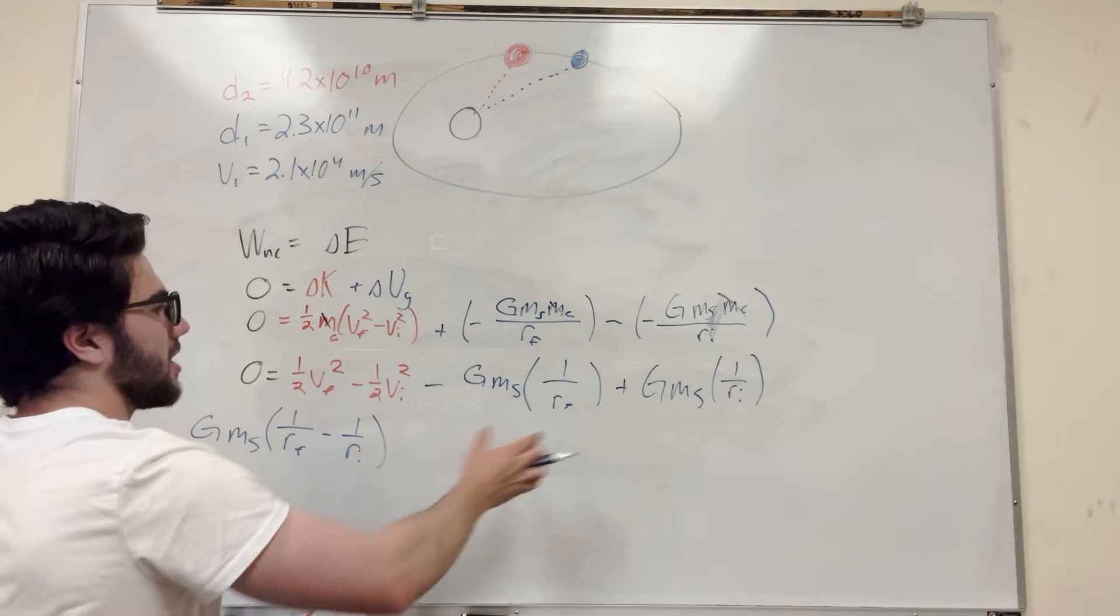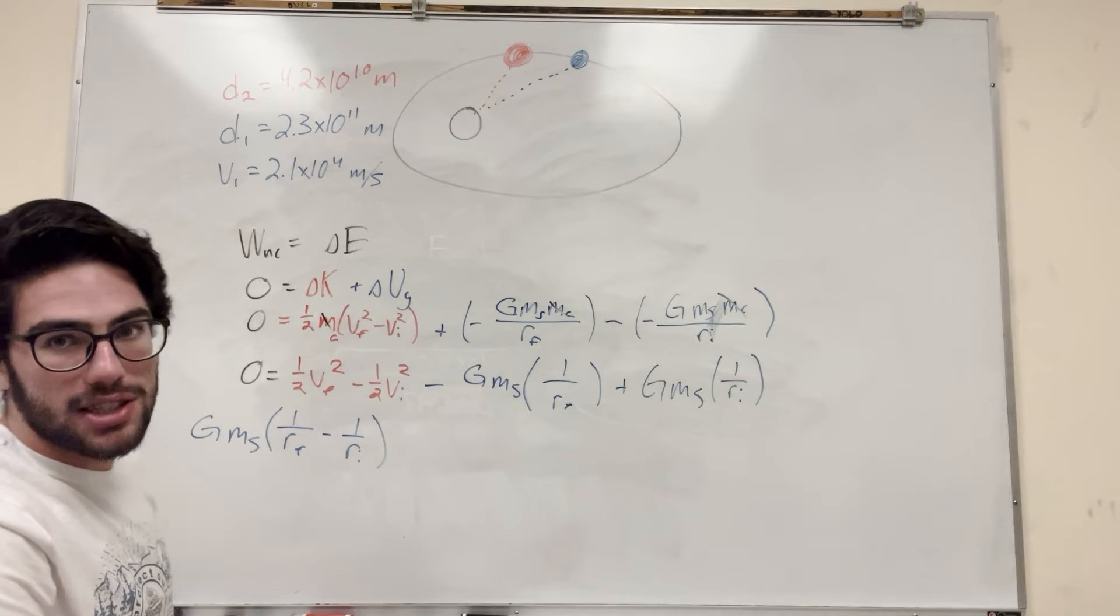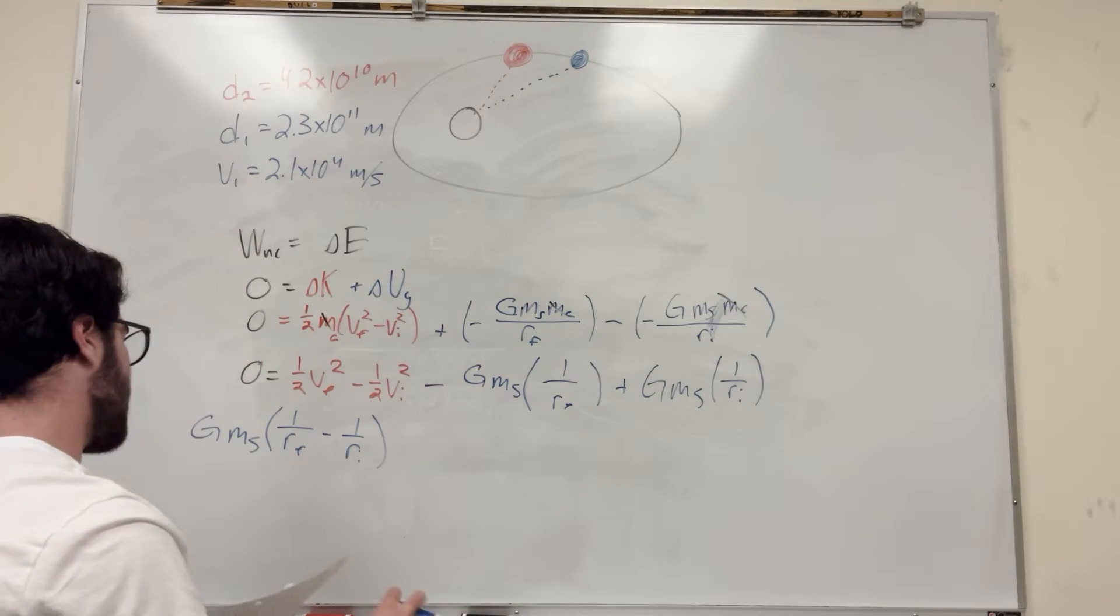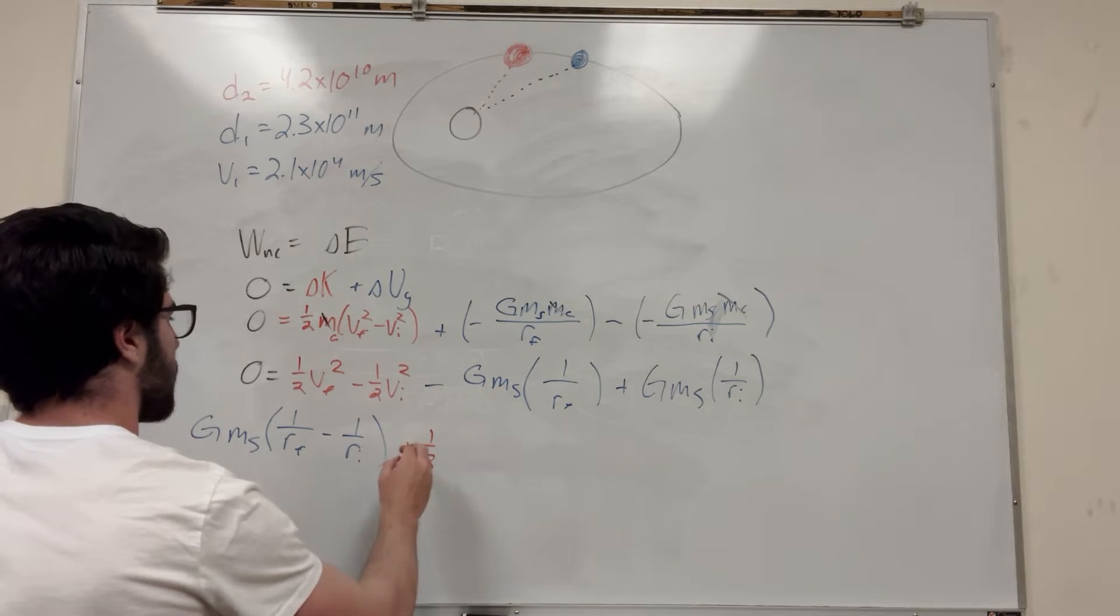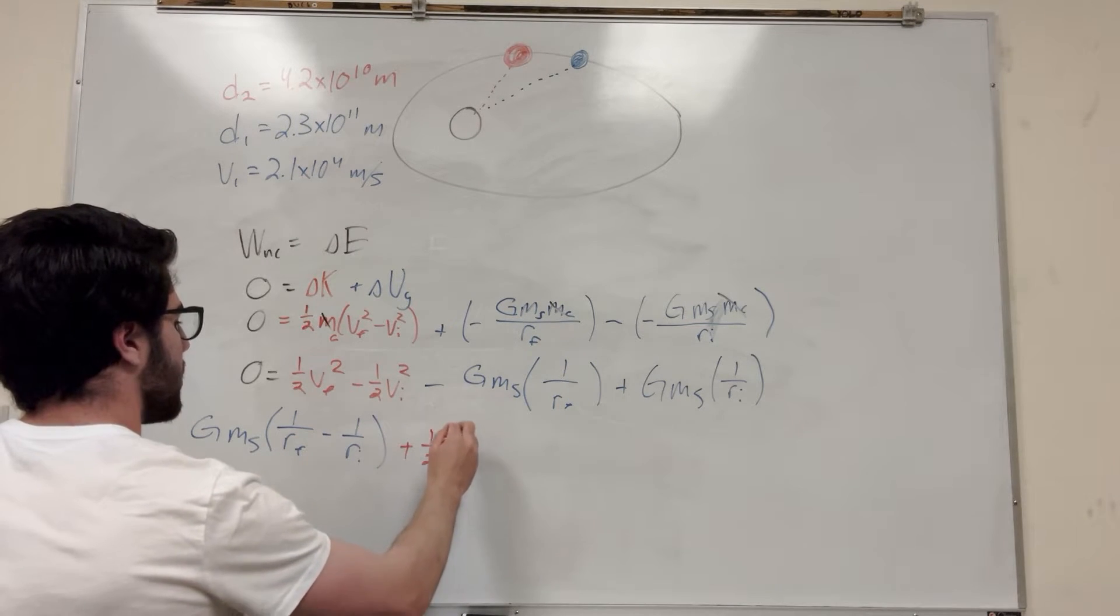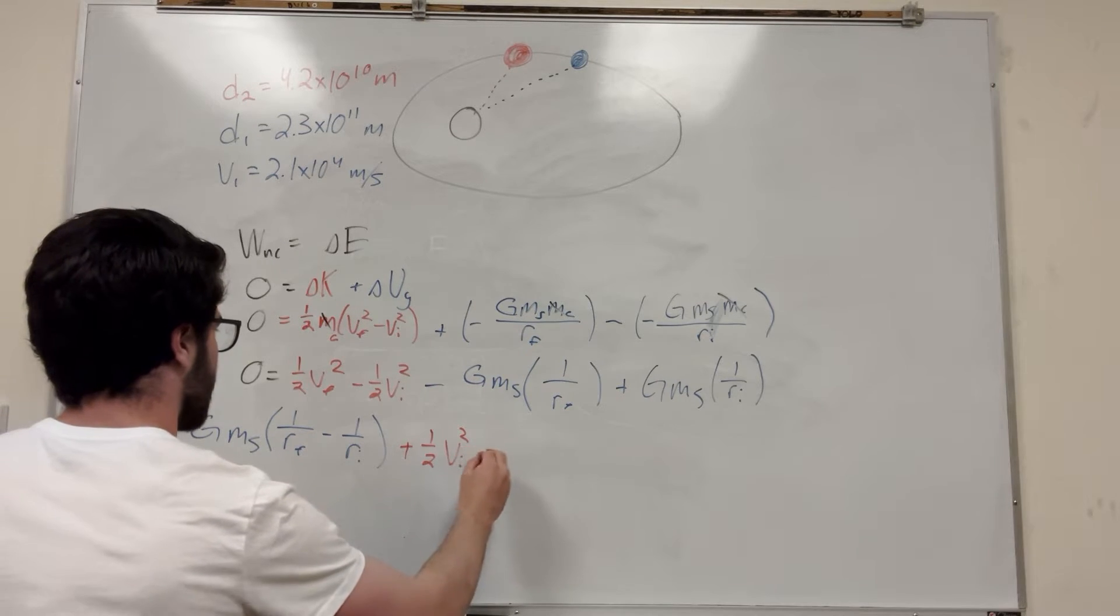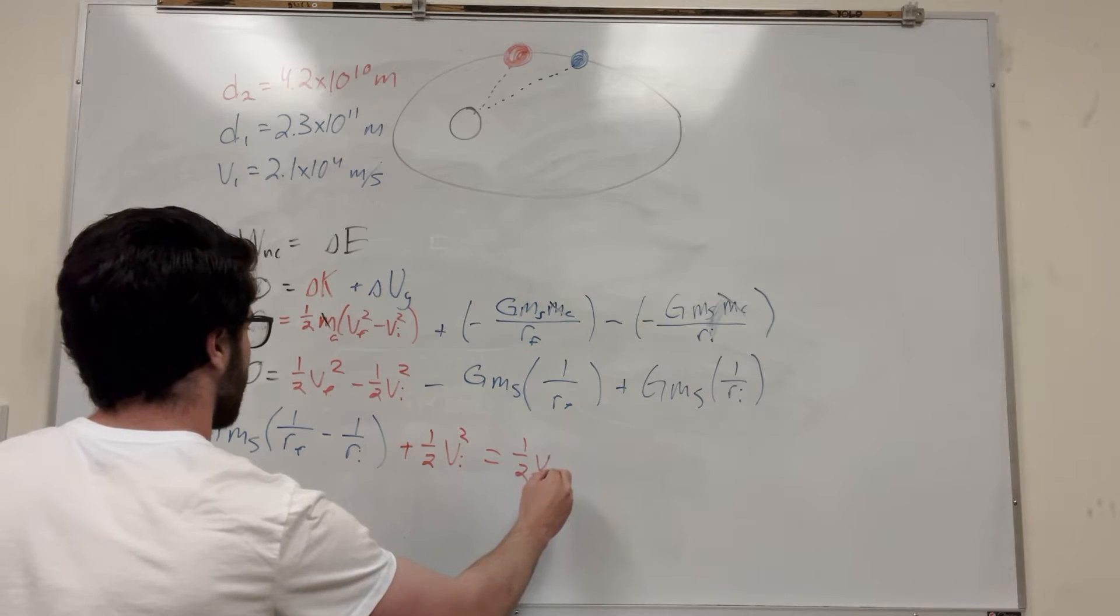This would be positive. This would be negative. If you want to expand it out, it's cool too. It's just going to be less to plug into your calculator if you do it this way. Then minus one half, or I guess plus one half because we're doing velocity initial squared. And then that's going to be equal to one half velocity final squared.